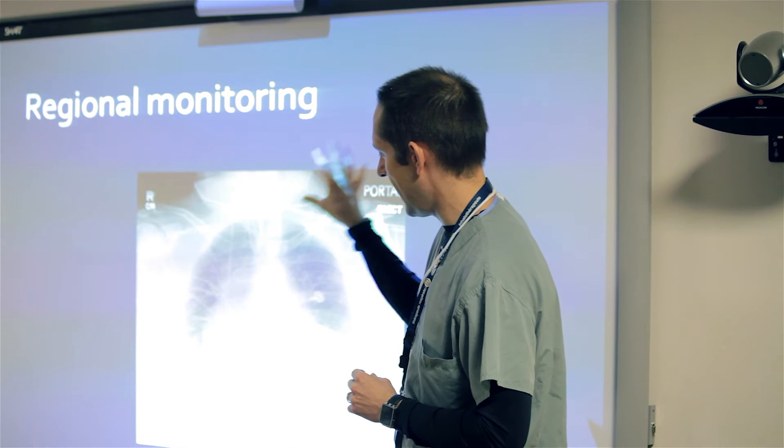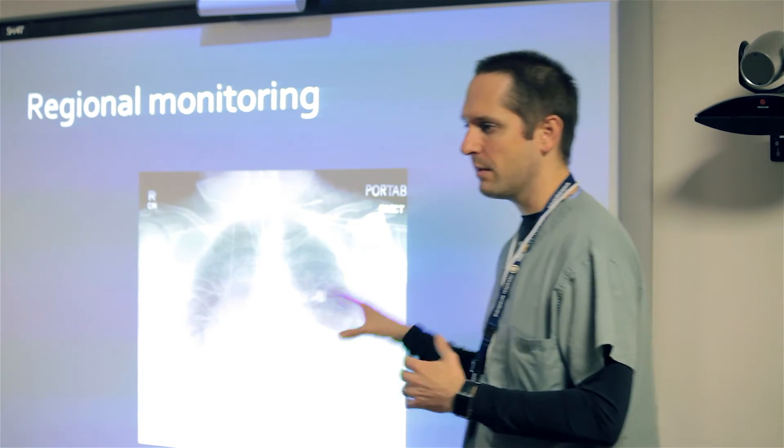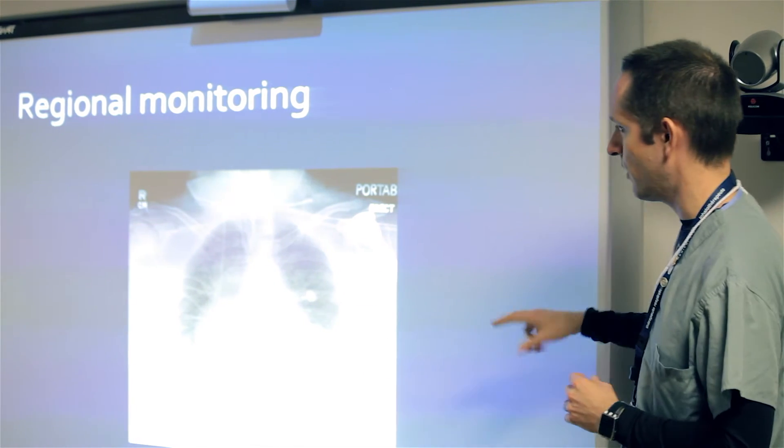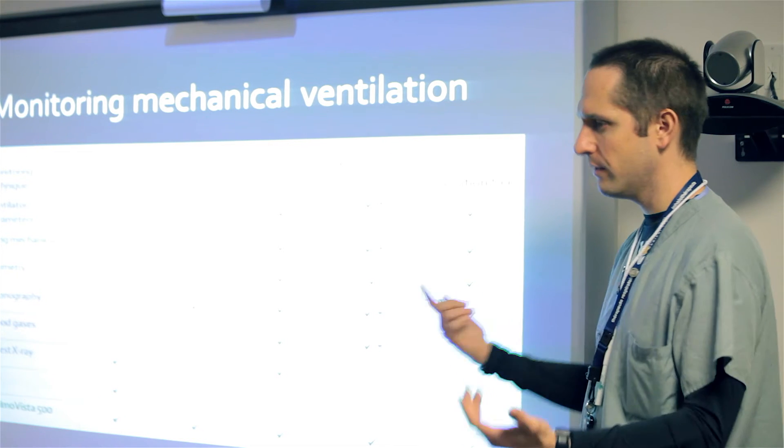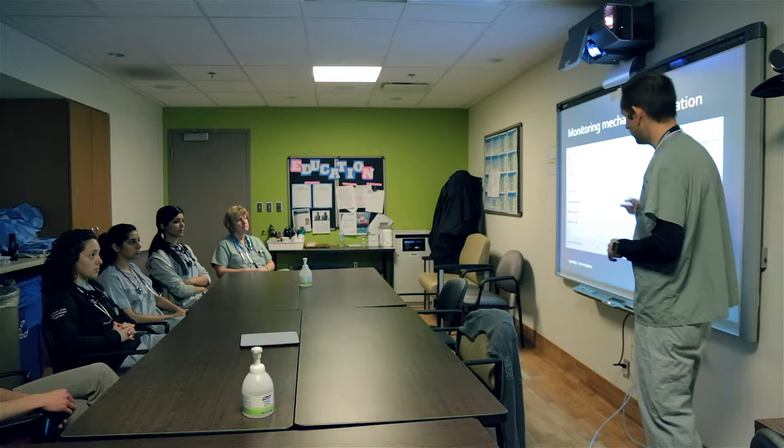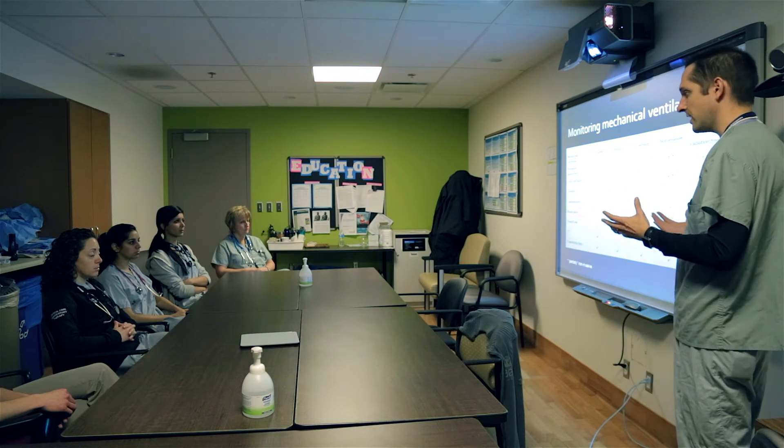A chest x-ray gives us similar information where we can say we have bilateral infiltrates or the patient looks wet. We can make comments on x-rays in terms of regional changes that are going on or if they're changing or getting better. What the Palma Vista device does is gives us regional information. It is continuous, at the bedside, non-invasive and radiation free, which is the only difference between the CT scan and chest x-ray.